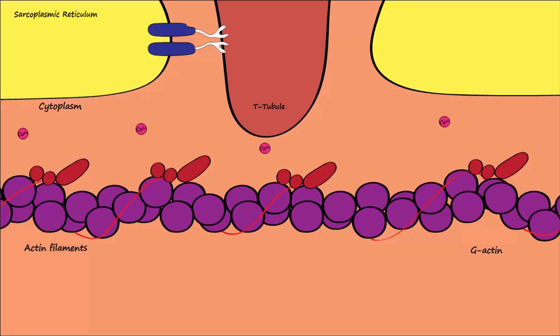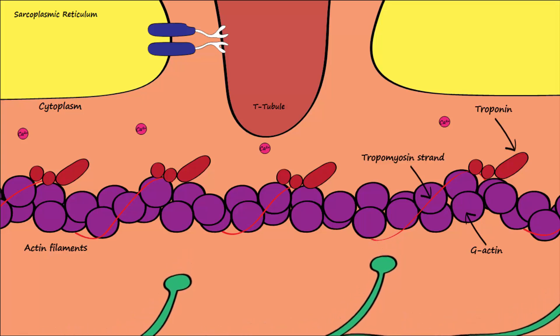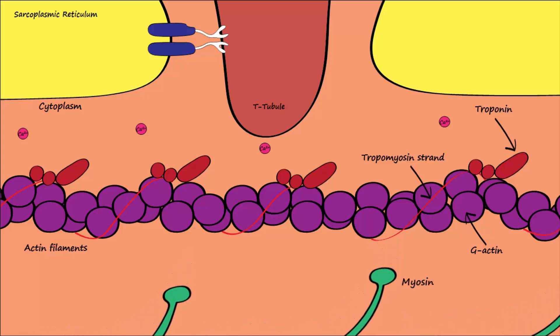Troponin proteins are attached to tropomyosin, which is a strand that covers the G-actin active sites, preventing crossbridge formation and interaction of myosin and actin. Calcium binds to troponin, causing a conformational change in troponin, which then causes tropomyosin to move.